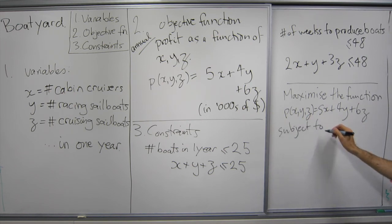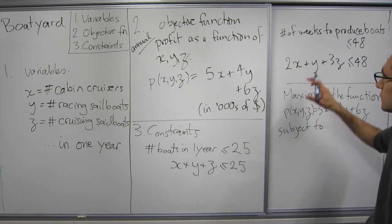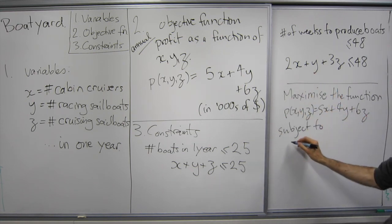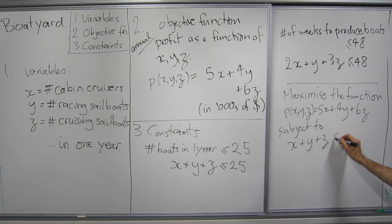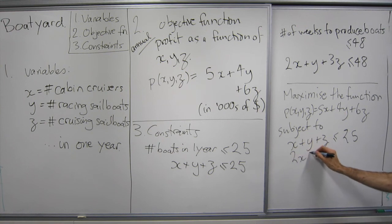subject to, and we've got our two constraints here, plus our non-negativity constraints. So we have X plus Y plus Z is less than or equal to 25, and 2X plus Y plus 3Z less than or equal to 48,